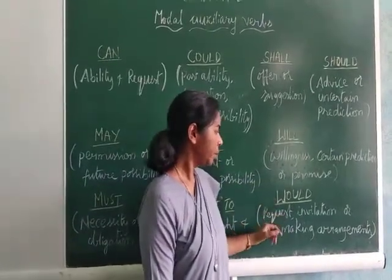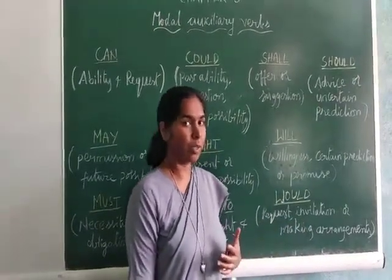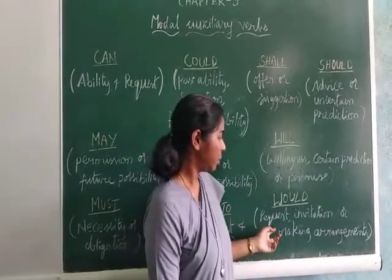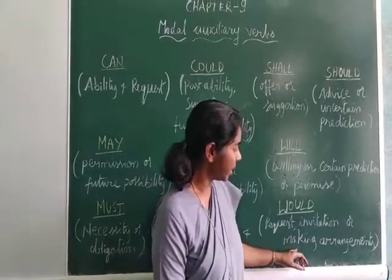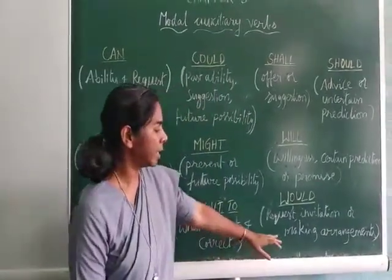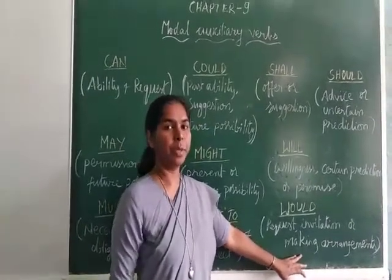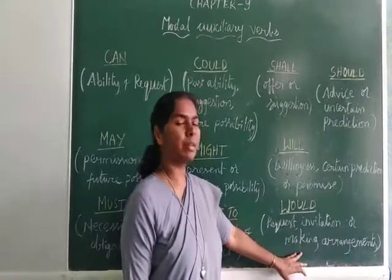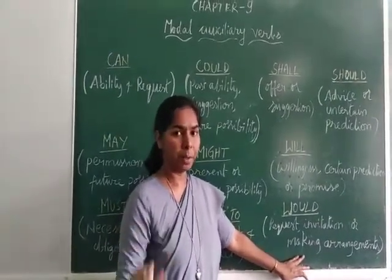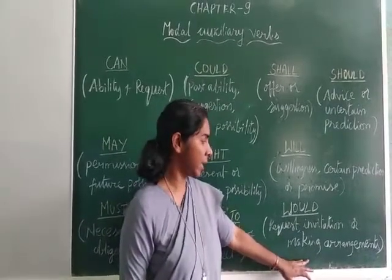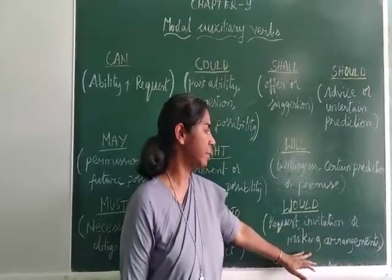The next one is 'would'. Would is used for requests — for example, 'Would you pass me the book?' It is also used for invitations — 'Would you come to my home?' And would is used for making arrangements — for example, 'I would come and pick you from the station,' meaning you arrange a vehicle to pick someone up. So we use would for requests, invitations, and making arrangements.